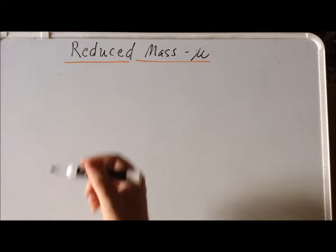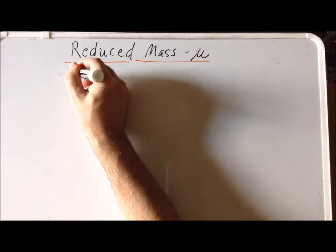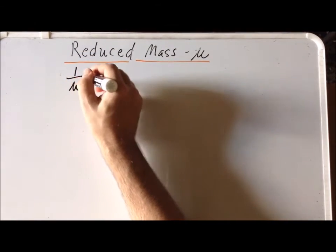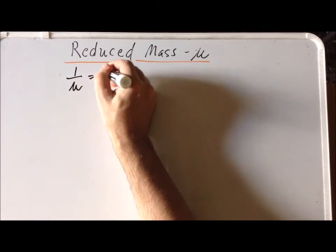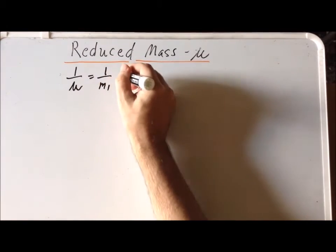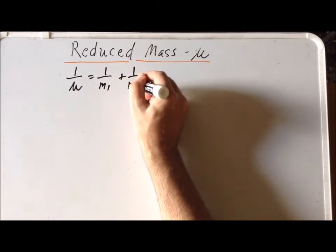By definition, the reduced mass of two particles, 1 over mu, is equal to 1 over the first mass plus 1 over the second mass.